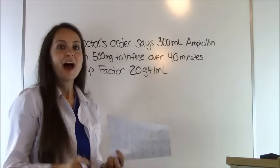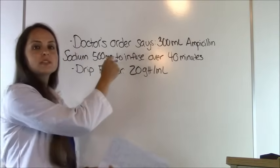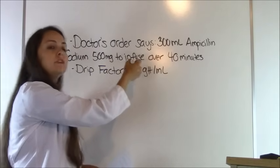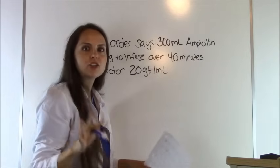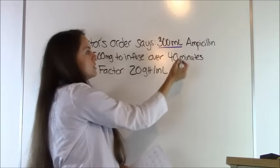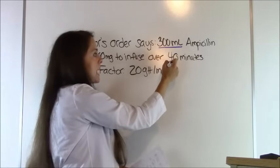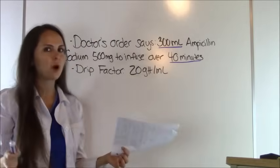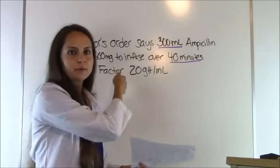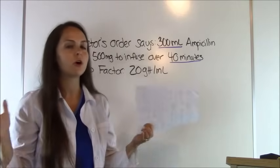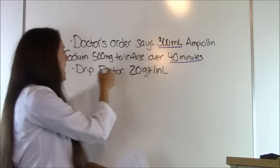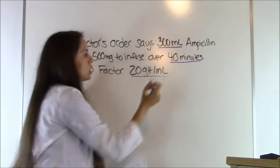Now let's work another one. Here's our second problem. Doctor's order says 300 milliliters of ampicillin sodium 500 milligrams to infuse over 40 minutes. We want 300 milliliters to go in over 40 minutes. These problems like to throw extra stuff in to throw you off — the 500 milligrams is insignificant to this calculation. We have a drip factor of 20 drops per milliliter.